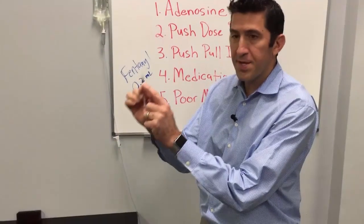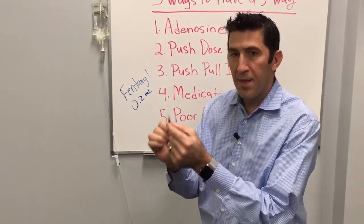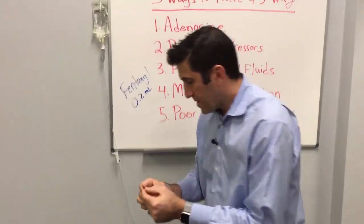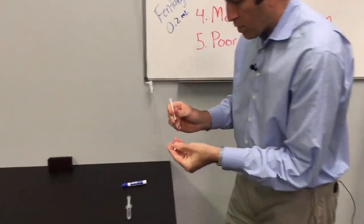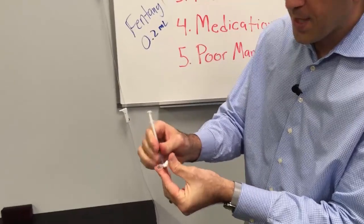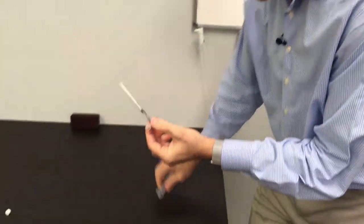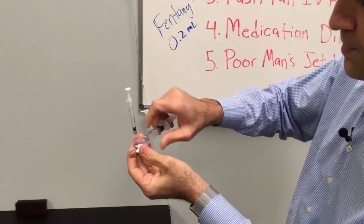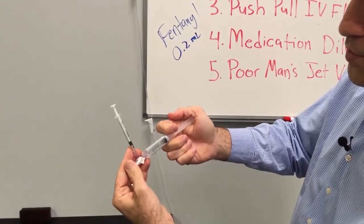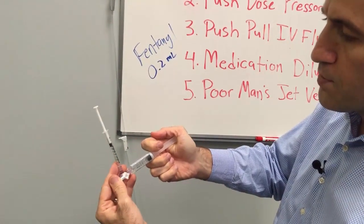So here's my fentanyl, I've drawn up 0.2 ml, but getting that through an IV may not be the best idea. So what we'll do is, we'll go ahead and put it onto the three-way stopcock. We'll go off here, we'll take a saline flush, and then simply we're just going to add some more volume to that syringe.